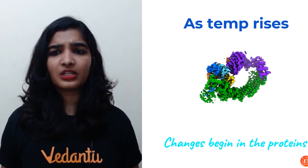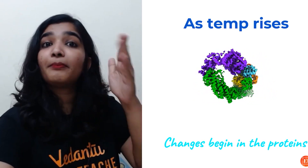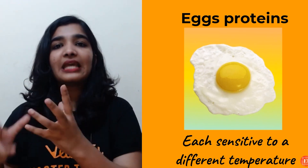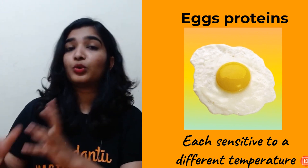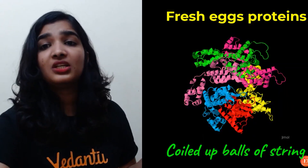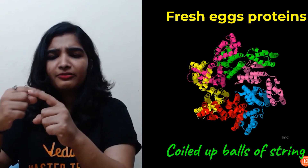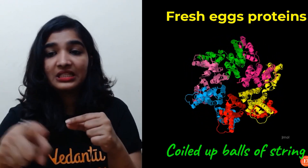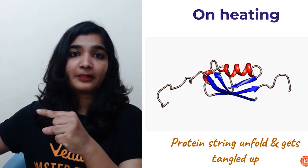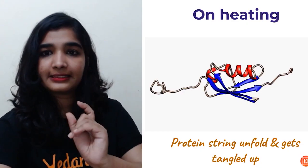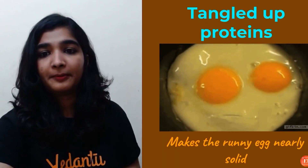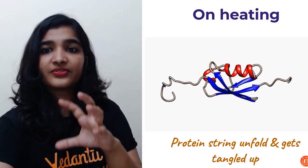The egg contains protein — you have to add egg, right? Those proteins are basically long-chain amino acids. As the temperature increases, there will be changes in the structure of these proteins. Every protein is temperature sensitive, so at different temperatures there will be change in their structure. Fresh egg proteins are coiled up — they have a coiled structure — but as the temperature increases, as you start heating, the protein strings will start unfolding and get tangled up.